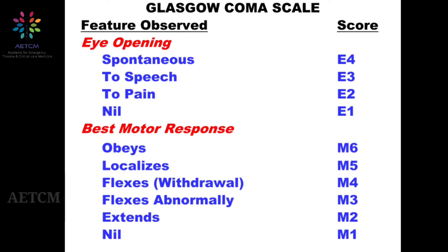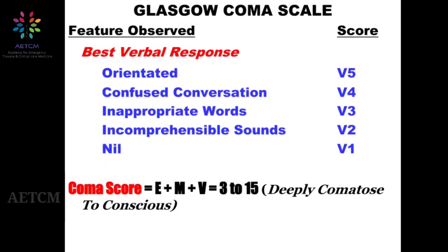So the eye score ranges from E4 to E1 and the motor score from M6 to M1. For verbal response, fully oriented is V5, confused conversation is V4, inappropriate words is V3, incomprehensible sounds is V2, and no response is V1. The Glasgow Coma Scale total ranges from 3 to 15 — 3 being deeply comatose and 15 being fully conscious.